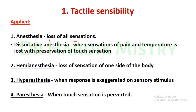Now the applied aspects of tactile sensibility. Anesthesia is the loss of all sensations. Dissociative anesthesia is when sensations of pain and temperature are lost with preservation of touch sensation. Hemi-anesthesia is the loss of sensation on one side of the body. Hyperesthesia is when the response is exaggerated to a sensory stimulus. Paresthesia is when touch sensation is perverted.